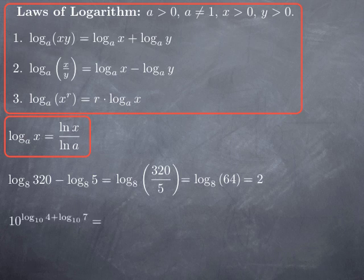For a second example, let's evaluate 10 to the power of [log_10(4) + log_10(7)]. In the exponent we have a sum of logs of the same base, so using the first formula, it's really just the log of the product — that is, 10^(log_10(28)). Now we have an exponential of base 10 with a log of base 10 plugged in, and since these functions are inverses of each other, we obtain simply 28.